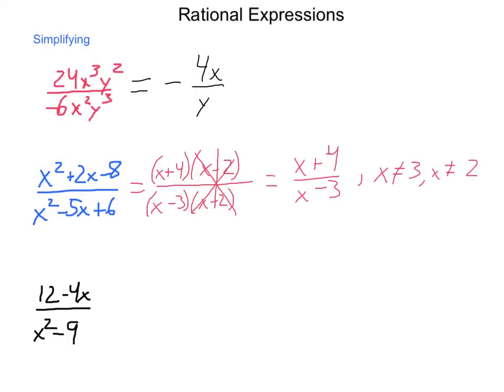Even though the x minus 2 term factored away in both cases, our end result has to have the same domain as the original. For our first problem, we forgot to do that, so we have to say here that y cannot equal 0 and x cannot equal 0 because we had an x squared in our original denominator.